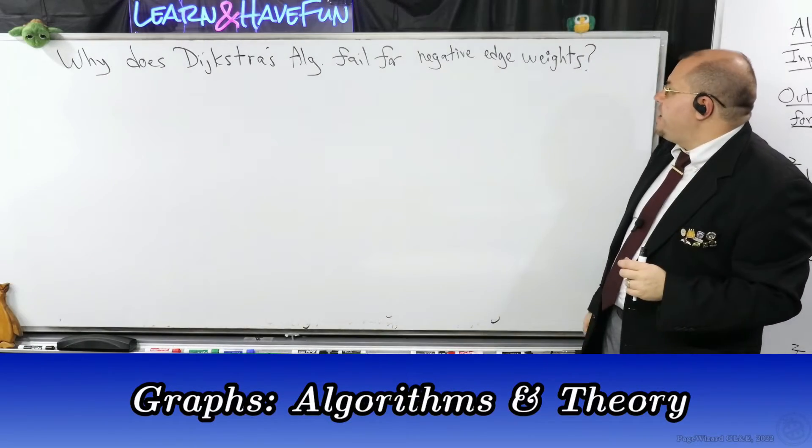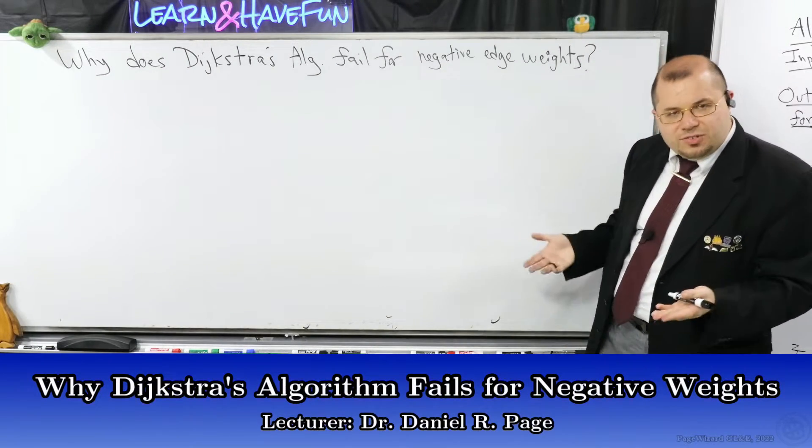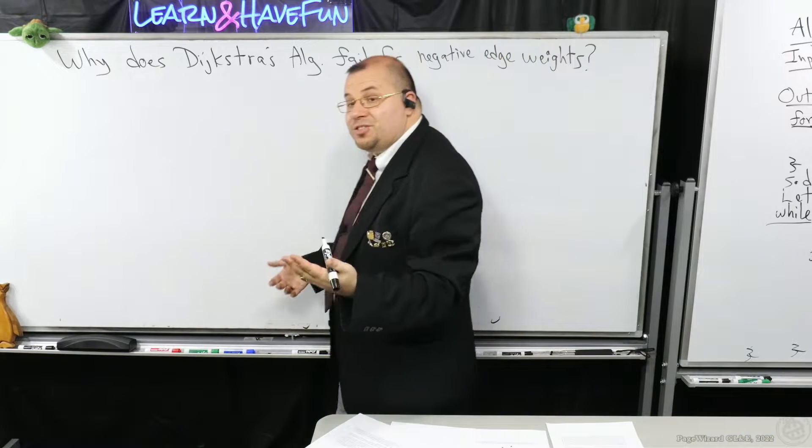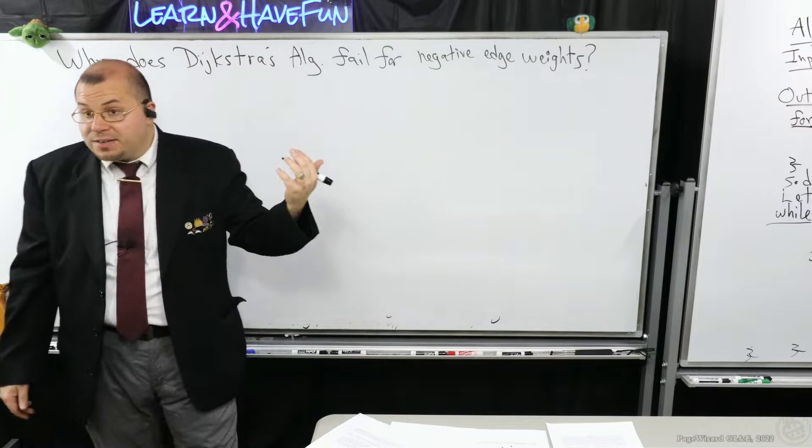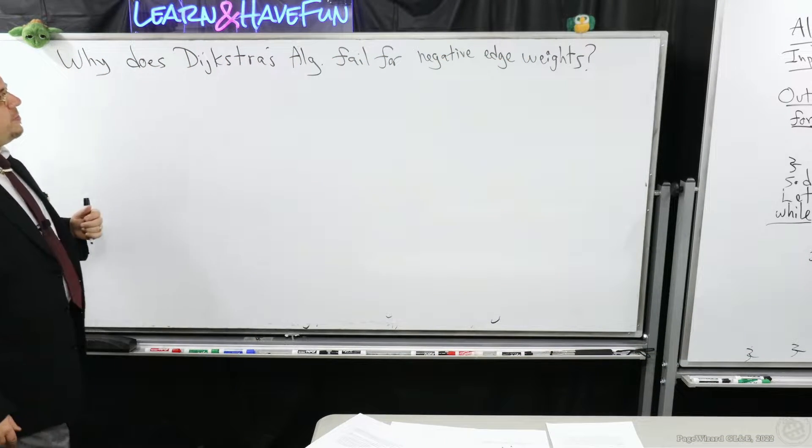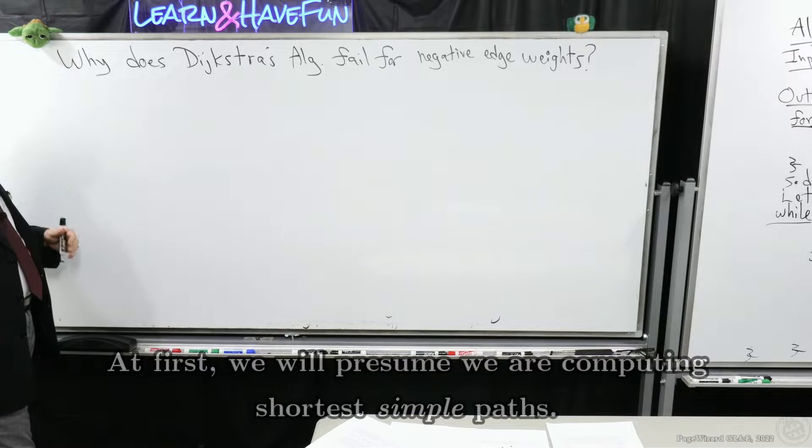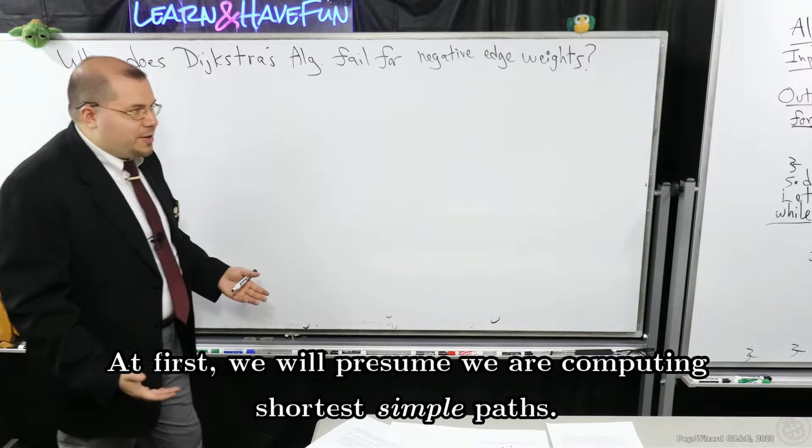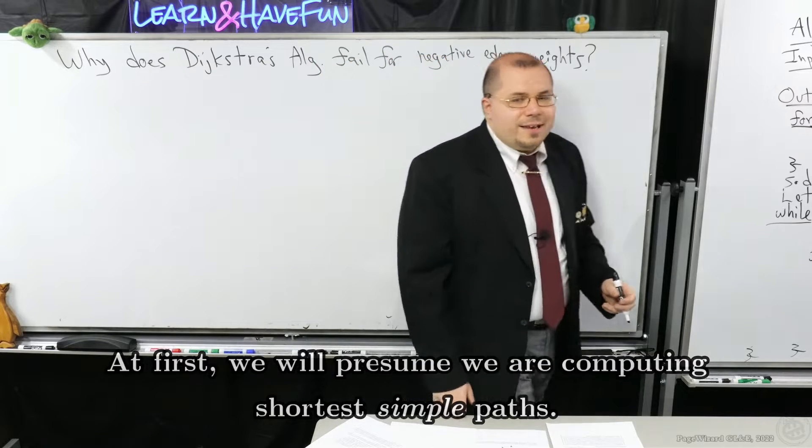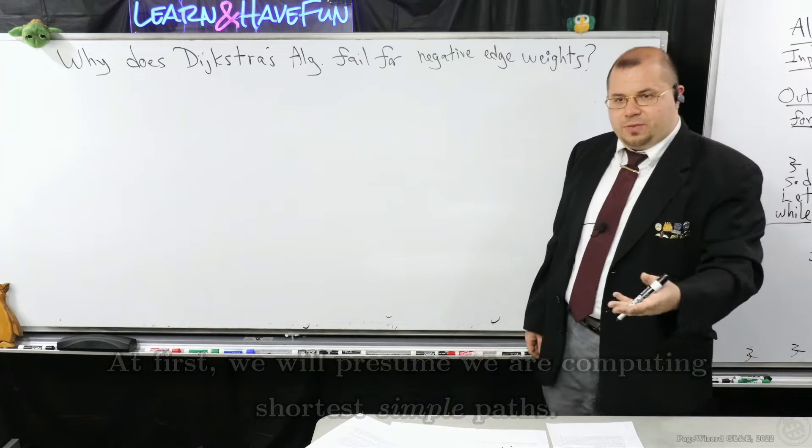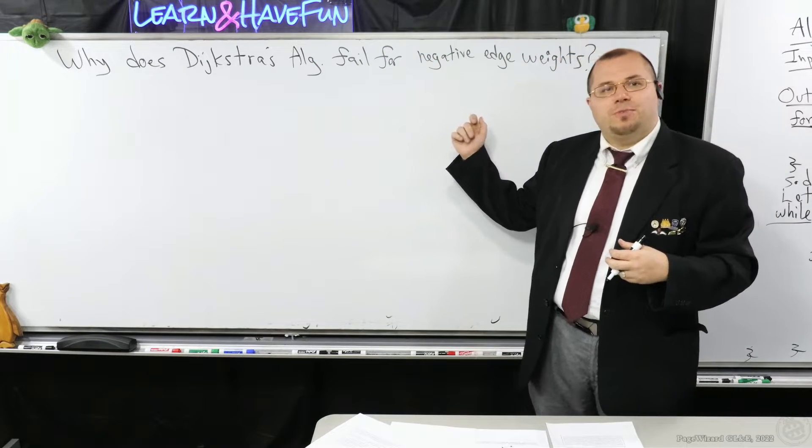So why does Dijkstra fail for negative edge weights? Classically, the single-source shortest path problem is defined where the edge weights are non-negative or positive. But let's consider the broader case when the edge weights are allowed to take on a negative value. So why is it that Dijkstra's algorithm isn't capable of handling this situation more broadly?